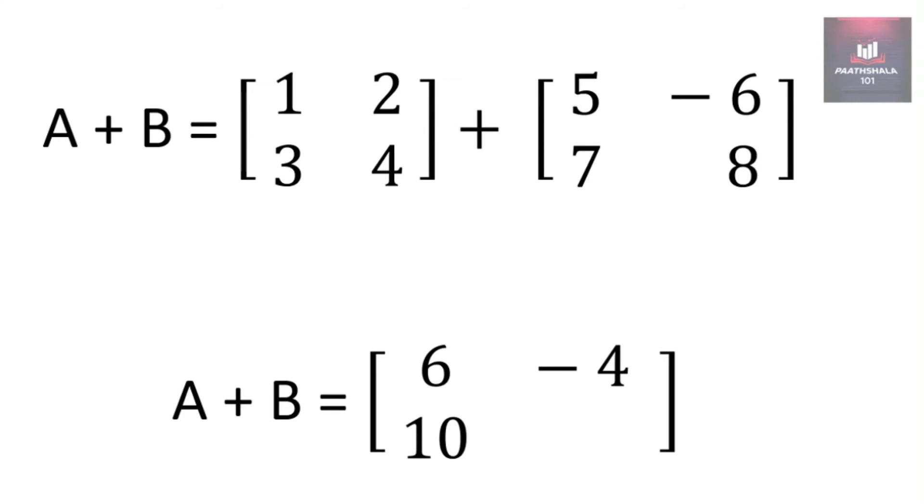Now for second row second column of A plus B, we will take second row second column of A and second row second column of B, we will add them. So 4 plus 8 will be 12.